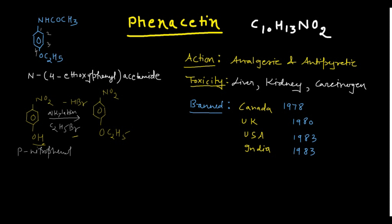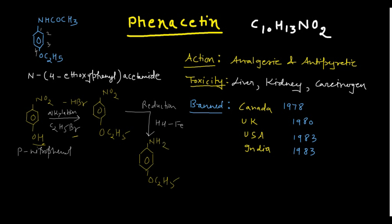In Step 2, we reduce the nitro group. For this reduction we use HCl with iron filings. The iron reacts with the acid to produce nascent hydrogen, which reduces the NO2 group into an amino group (NH2). The resulting intermediate is a benzene ring bearing the OC2H5 group and now an NH2 group at the para position.